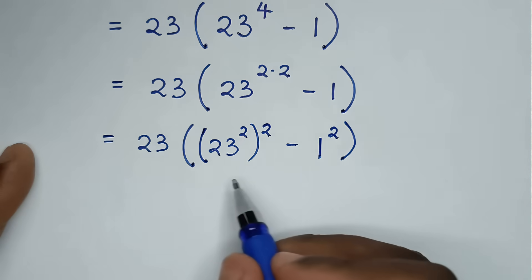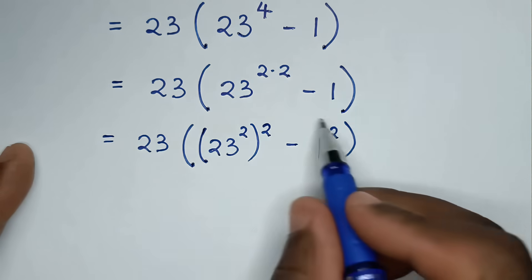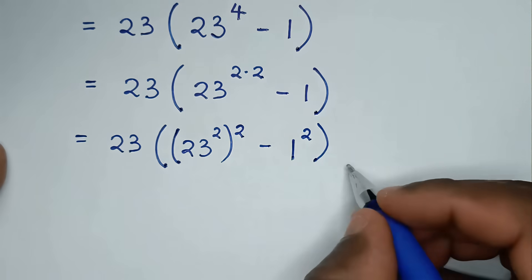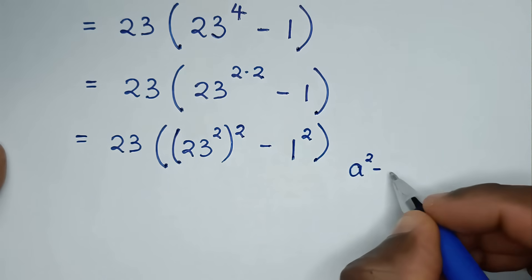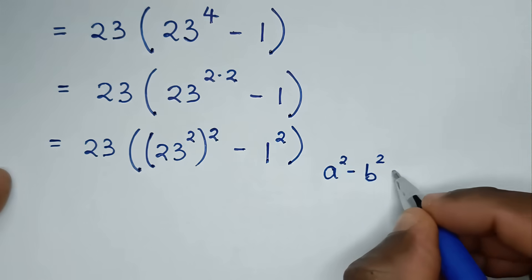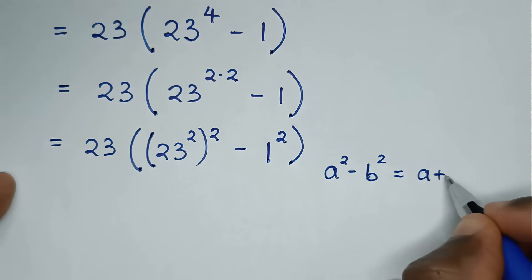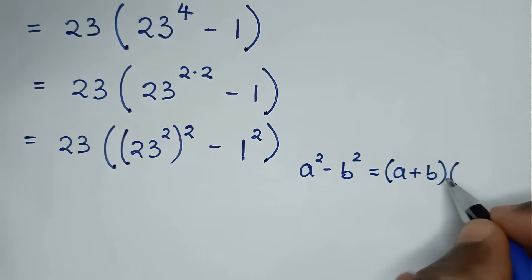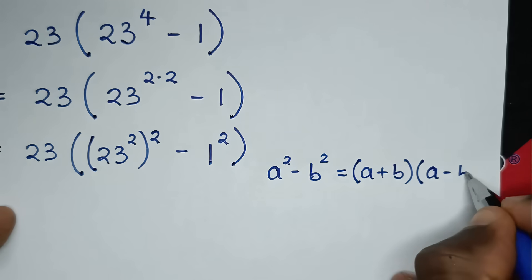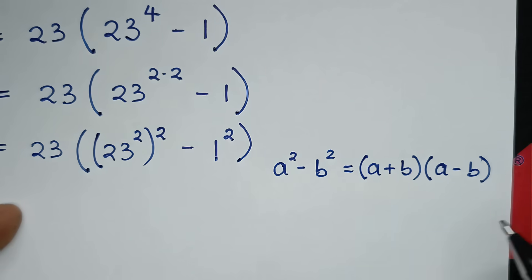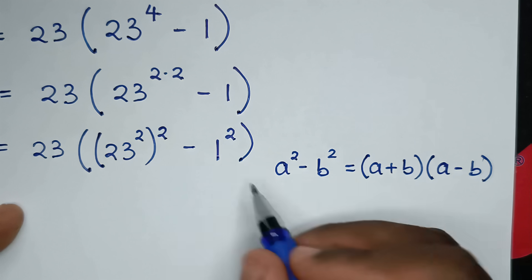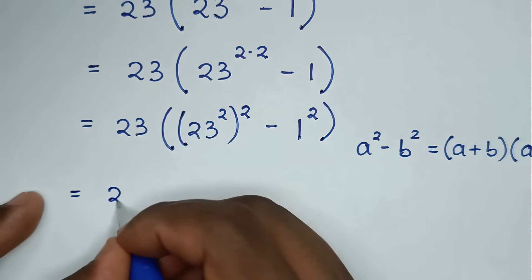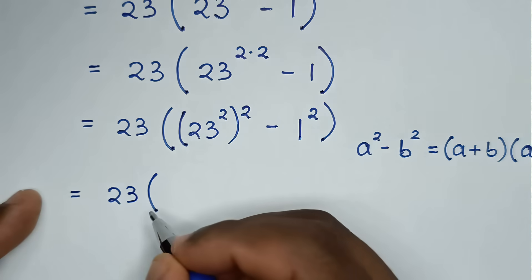Then in the next step, from here it is now a difference of two squares, so we'll apply the difference of two squares rule, which is a squared minus b squared is equal to a plus b bracket times a minus b bracket.